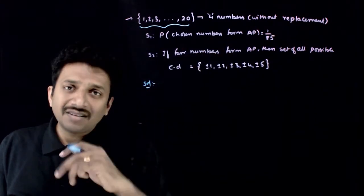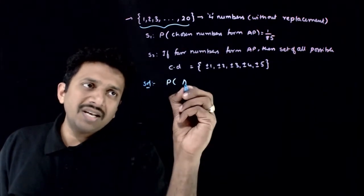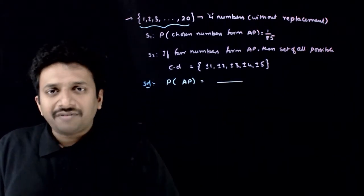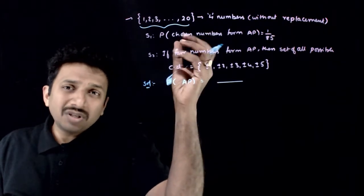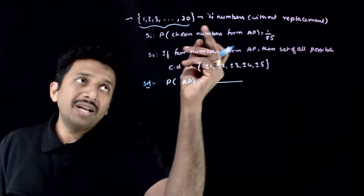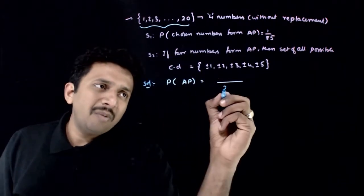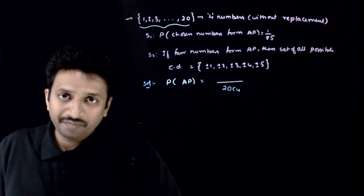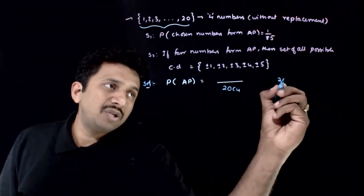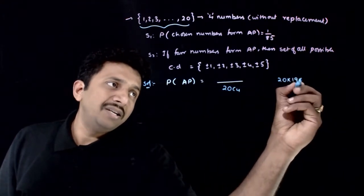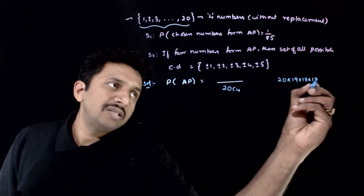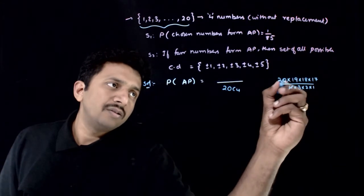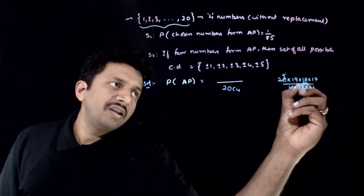First, let us find this. The denominator is easy to find. We are choosing 4 numbers out of 20 numbers without replacement, so the denominator is 20C4. What is 20C4? It is 20 × 19 × 18 × 17 divided by 4 × 3 × 2 × 1, which gives 4845.